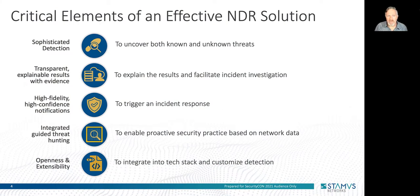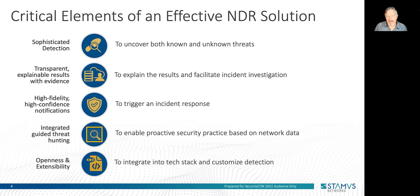As I mentioned earlier, the market analysts have succeeded in establishing a baseline definition for network detection and response solutions. But with nearly two dozen vendors staking claims, it's important to focus on the capabilities that will have the greatest impact on a successful deployment and operation. After nearly seven years of developing and deploying network security solutions, we at Stamis Networks have compiled input from our customers and prospects to identify five essential characteristics of a winning NDR solution: sophisticated detection, transparent and explainable results with evidence, high fidelity and high confidence notifications, guided threat hunting, and openness and extensibility.